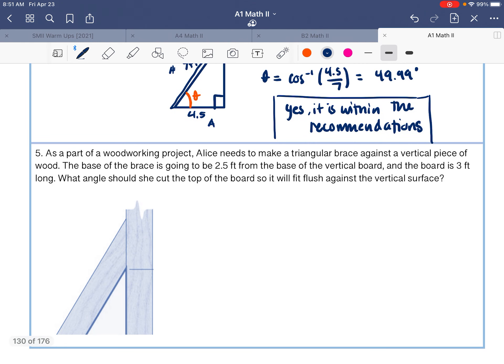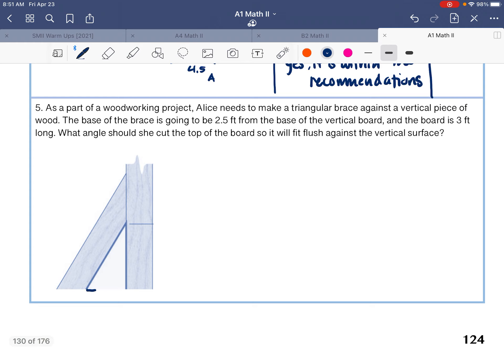And then number five, as a part of a woodworking project, Alice needs to make a triangular brace against a vertical piece of wood. The base of the brace is going to be two and a half feet from the base of the vertical board. So this is two and a half. And the board is three feet long. So we have three feet here. What angle should she cut the top of the board so it will fit flush against the vertical surface? So we're wondering about this angle. What angle should we cut that?